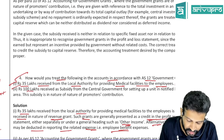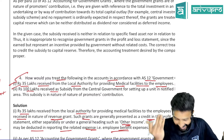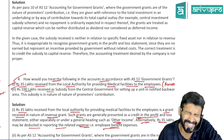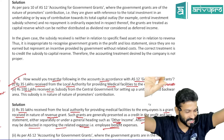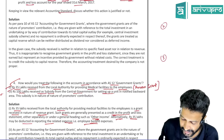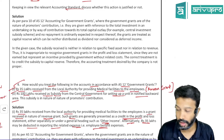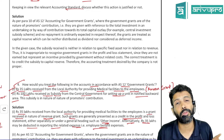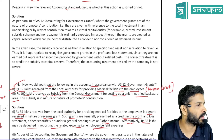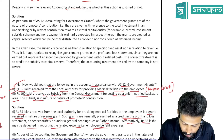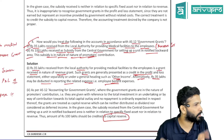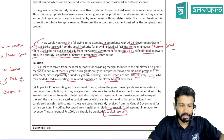Next sub-question: Rupees 100 lakh received as a subsidy from the central government for setting up a unit in a backward area. This is a monetary grant received for setting up a factory — which is in the nature of promoters' contribution, making it a capital grant. It should be shown under capital reserve.